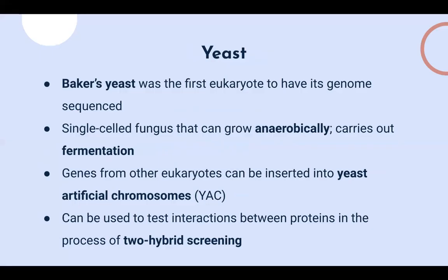Lastly, I'll talk about yeast. Baker's yeast, scientifically known as Saccharomyces cerevisiae, was the first eukaryote to have its genome sequenced. Baker's yeast is a single-cell fungus that can grow anaerobically, carry out fermentation, and reproduce asexually by budding. Genes from other eukaryotic organisms can be inserted into yeast artificial chromosomes — also known as YACs — to help map and understand expression in yeast cells. These YACs were used for mapping human genes in the Human Genome Project and can hold up to 1 million base pairs.